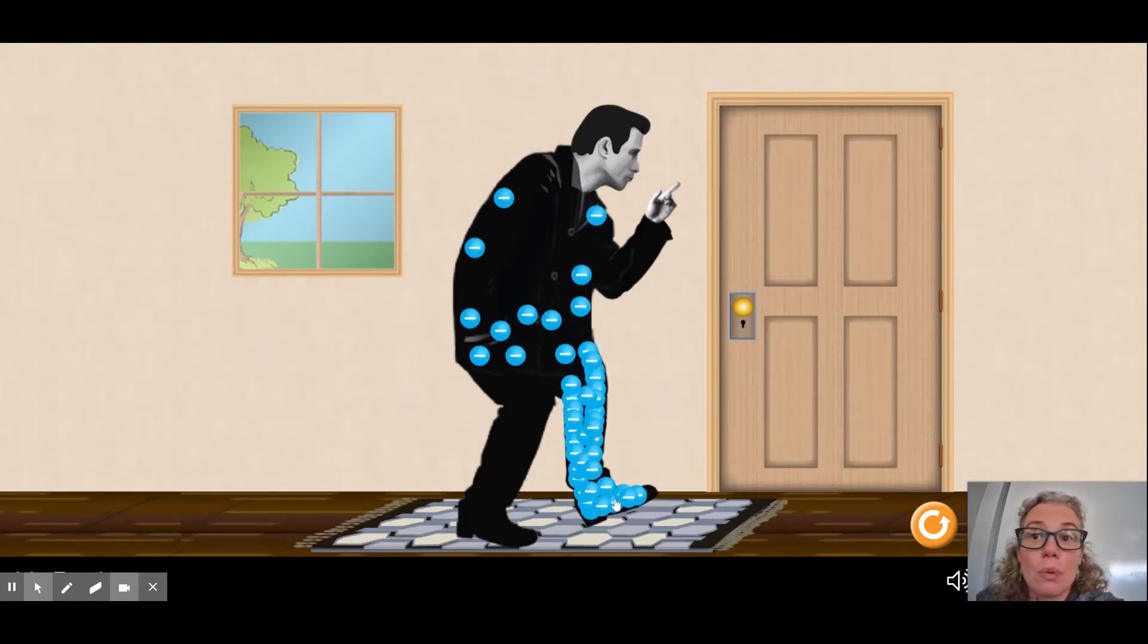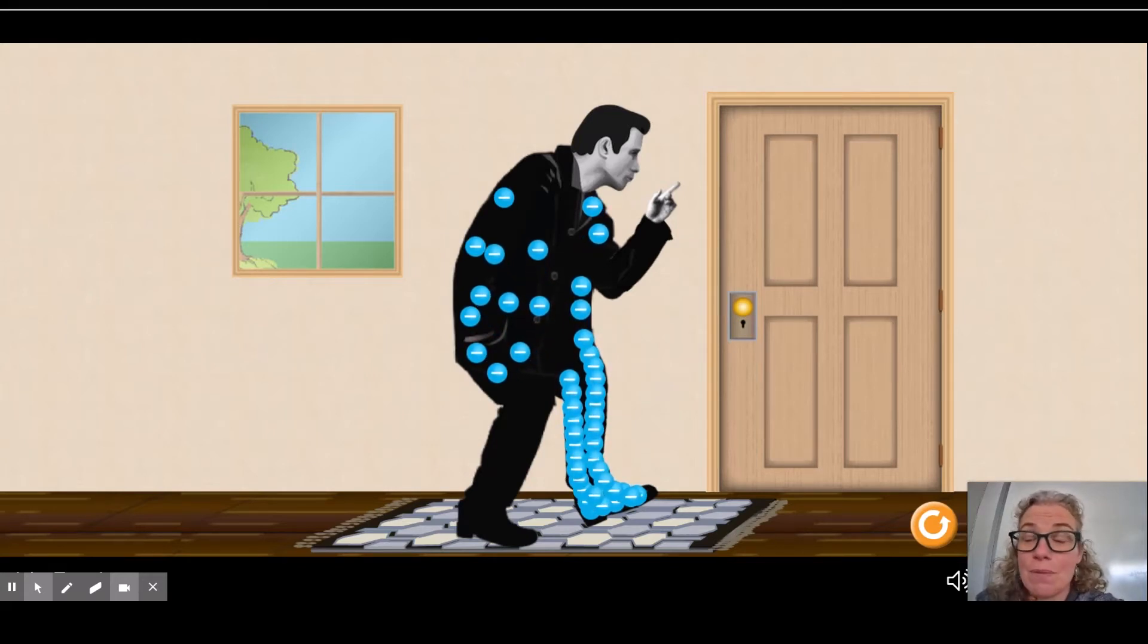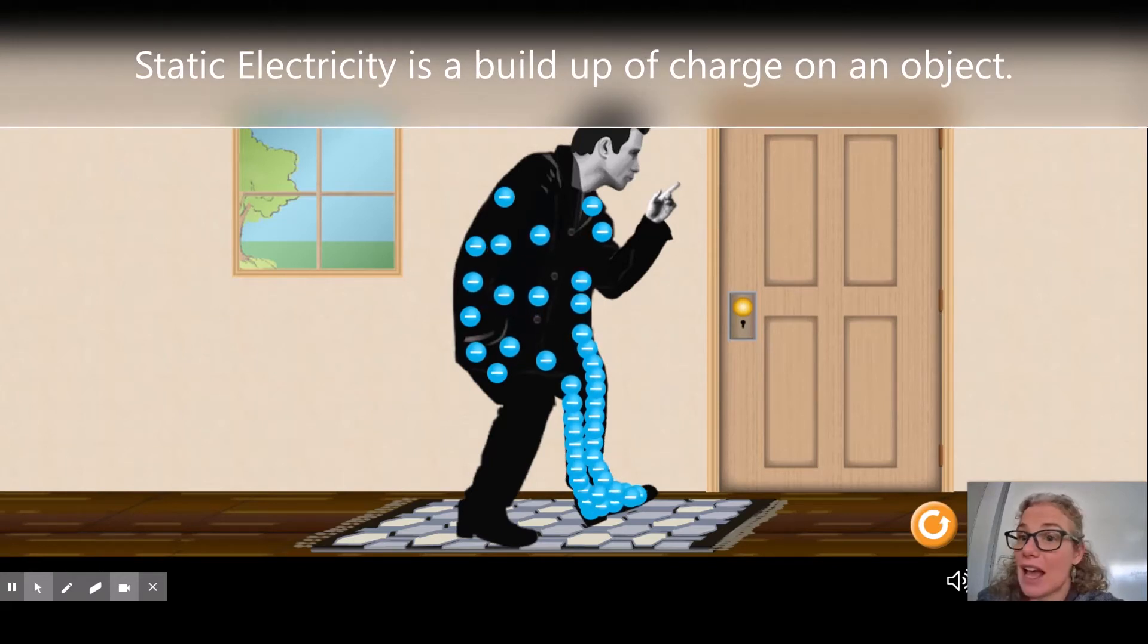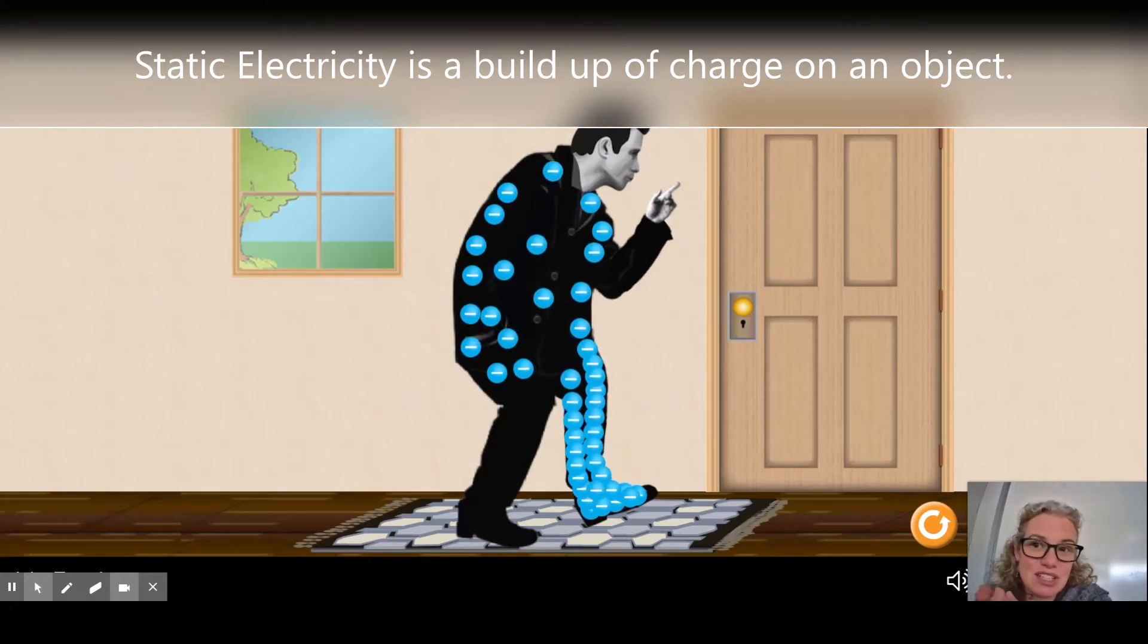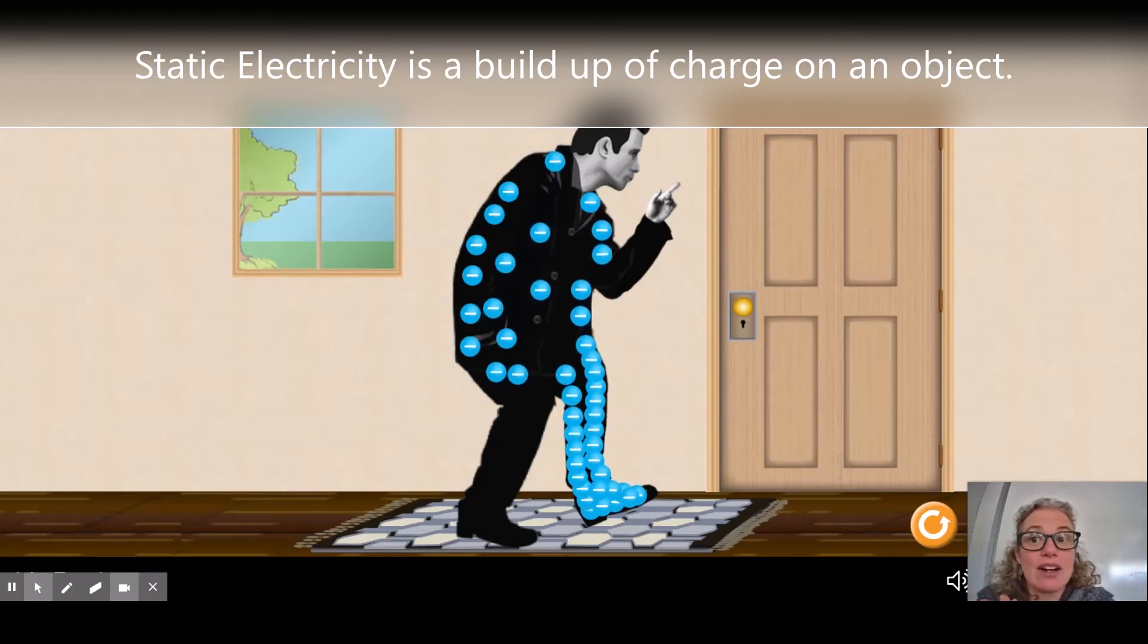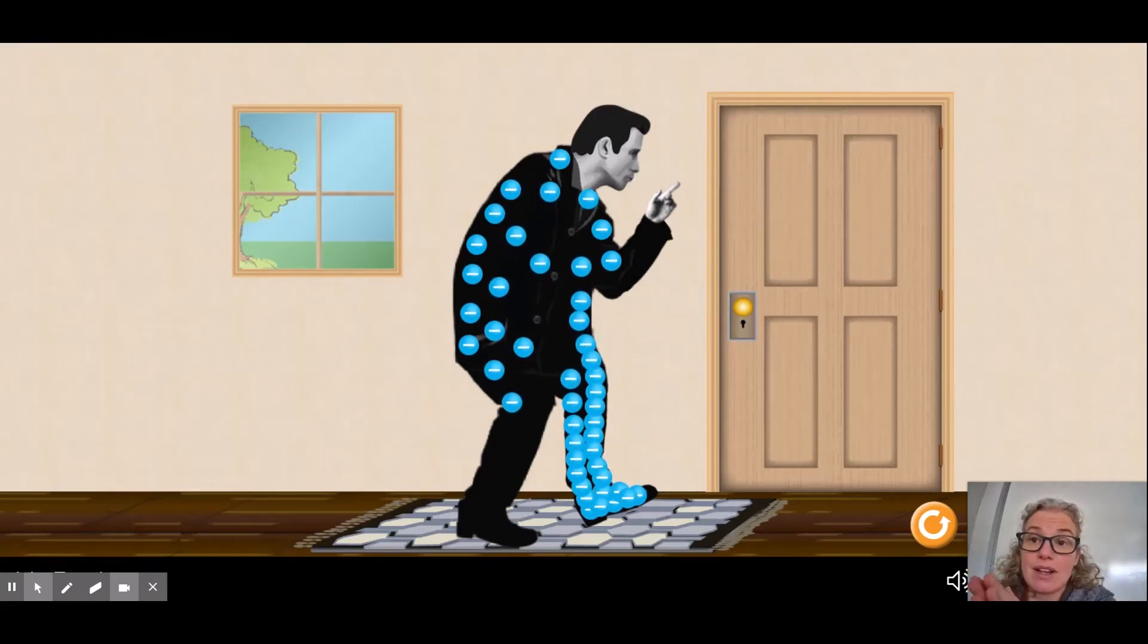Static electricity is the transfer of electrons, often due to rubbing or friction. So this happens when you rub a balloon on your hair, you rub your socks on the carpet, sometimes a sock will stick to your sweater in the dryer. Those are all examples of friction causing electrons to transfer from one object to another.